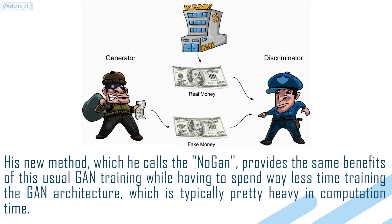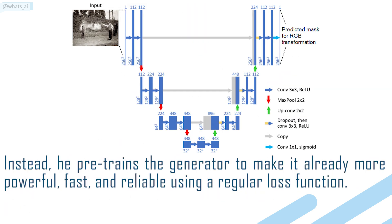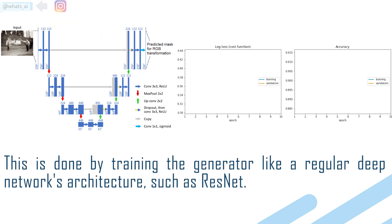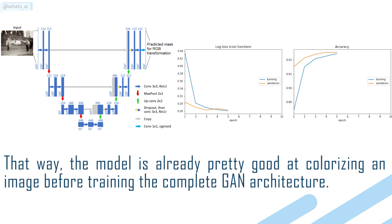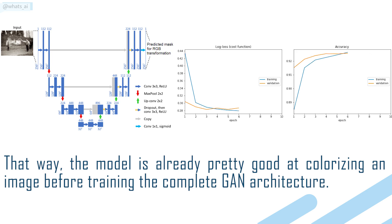His new method, which he calls NoGAN, provides the same benefits of usual GAN training while having to spend way less time training the GAN architecture, which is typically pretty heavy in computation time. Instead, he pre-trains the generator to make it already more powerful, fast, and reliable using a regular loss function. This is done by training the generator like a regular deep network architecture, such as ResNet. That way, the model is already pretty good at colorizing an image before training the complete GAN architecture.